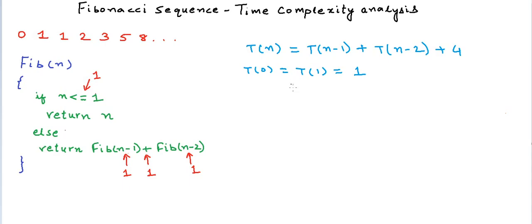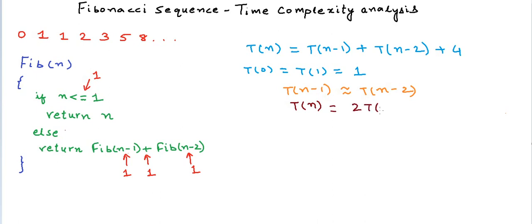Now let us try to reduce T(n) in terms of known values T(0) and T(1), but before I do that I will try an approximation. Let's say the time taken to calculate Fib(n-1), which is T(n-1), is almost equal to the time taken to calculate Fib(n-2), which is T(n-2). In reality, T(n-1) is greater than T(n-2), so what we are trying to do here is calculate a lower bound for T(n). With this approximation, T(n) would be 2 times T(n-1) plus 4.